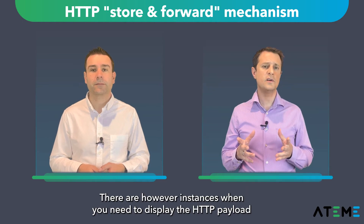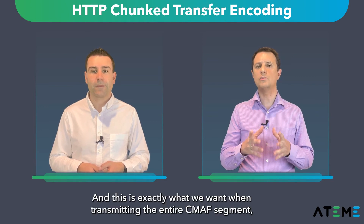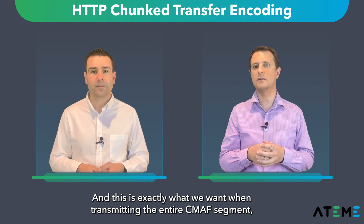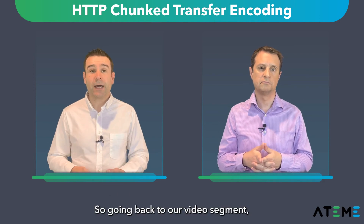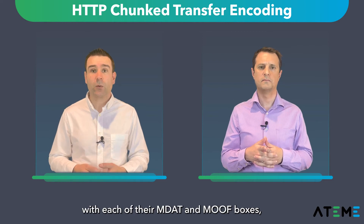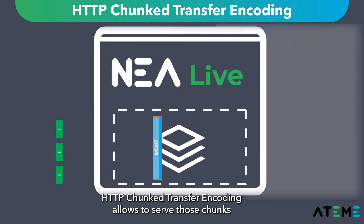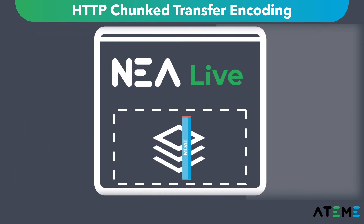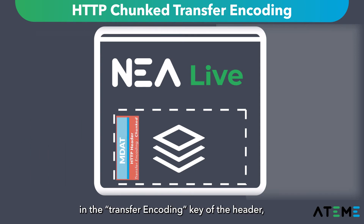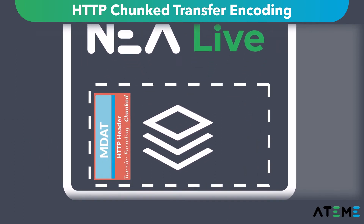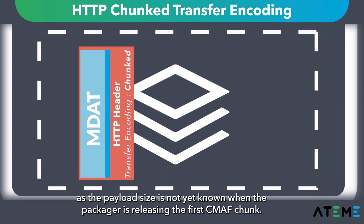There are however instances when you need to display the HTTP payload before the client actually finishes receiving the full message. And this is exactly what we want when transmitting the entire CMAF segment, which is in our case the HTTP payload made up of all the CMAF chunks. So going back to our CMAF chunks, with each of their MDAT and MOF boxes, HTTP chunk transfer encoding allows to serve those chunks while the segment is still being processed. The chunk transfer encoding mechanism will use the chunked value in the transfer-encoding key of the header, which is part of the HTTP response. This is instead of the content-length key, as the payload size is not yet known when the packager is releasing the first CMAF chunk.